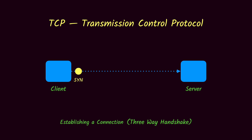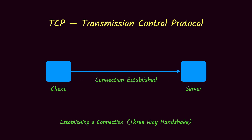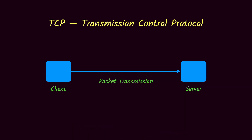First, the client sends a SYN (synchronize) packet to the server, equivalent to saying 'hey server, I want to establish a connection with you.' The server receives this and replies with SYN-ACK (synchronize-acknowledgement), meaning 'hey client, I'm ready to accept the connection.' The client then replies with an ACK packet, after which the connection is established and packet transmission can begin.